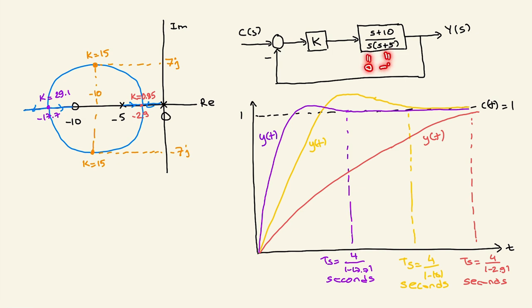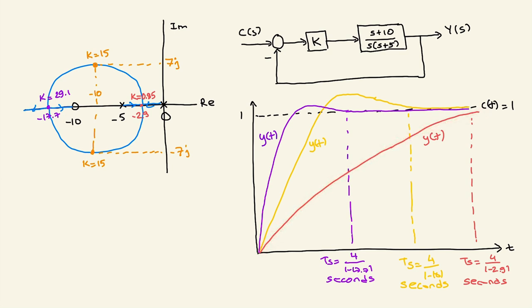Now let's move to another example. This system has a forward loop transfer function with poles at 0 and minus 5, and a zero at minus 10. The root locus has a breakout point. If you select gain k equals 0.85, the two closed-loop poles meet at minus 2.9. Settling time is 4 divided by 2.9 seconds, and since both poles are real, the system converges without oscillations.